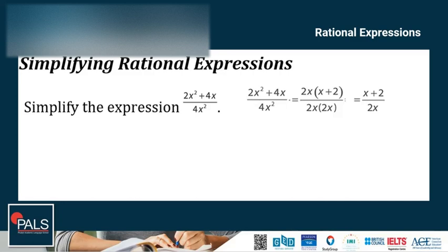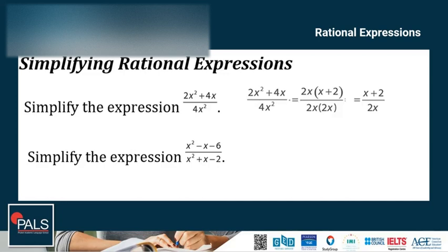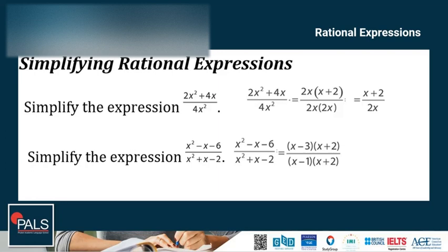Let's try another example. Simplify the expression x squared minus x minus 6, all over x squared plus x minus 2. First, factor out both the numerator and denominator. Using reverse FOIL, the numerator is x minus 3 times x plus 2, and the denominator is x minus 1 times x plus 2. The numerator and denominator share a factor of x plus 2, so the simplified form is x minus 3 over x minus 1.